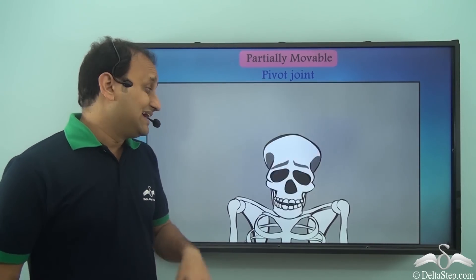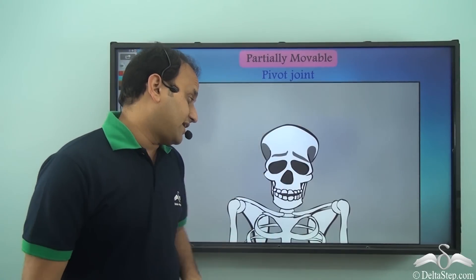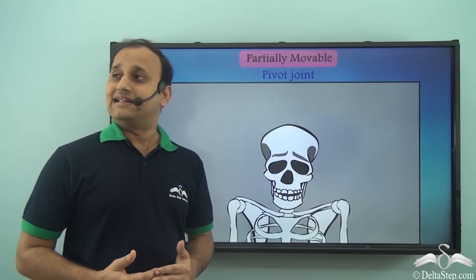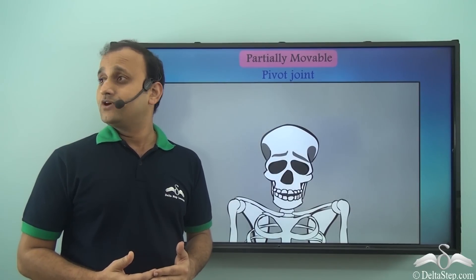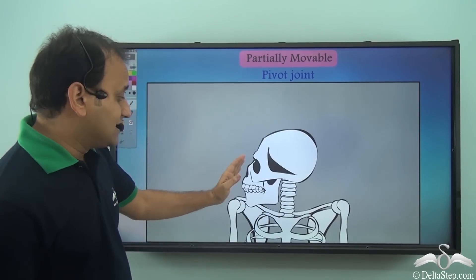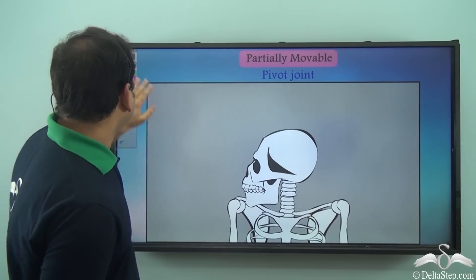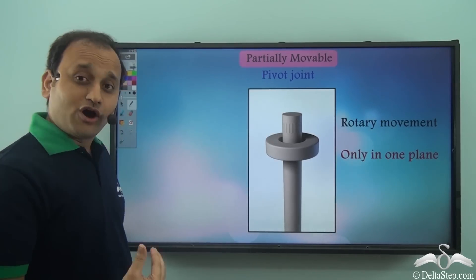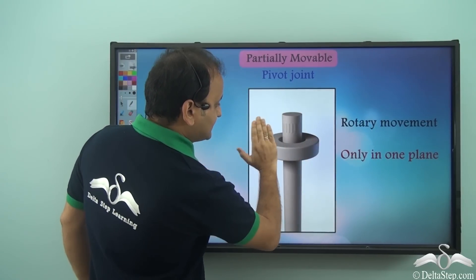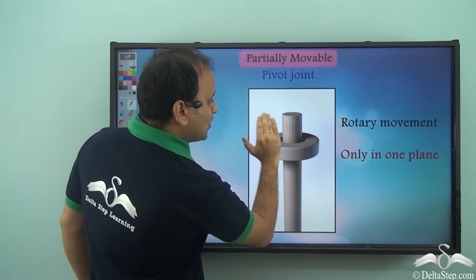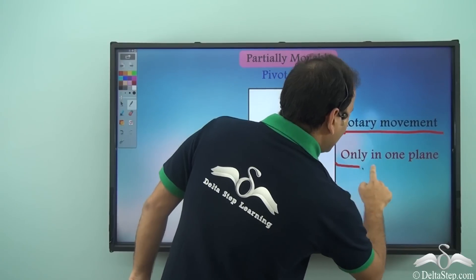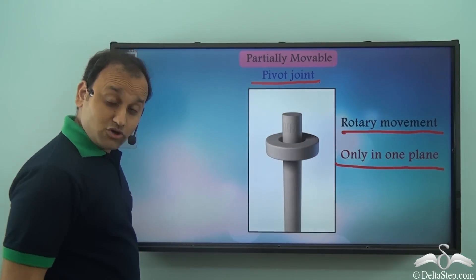In the case of partially movable joints, another example is our neck. As you rotate your neck, this is the maximum limit on this side and then this is the maximum limit on the other side — after that it gets locked. Such joints are called pivot joints. They are able to rotate but only on a fixed plane, rotating like this and only like this, with no other direction available. So pivot joints have a rotary movement in only one plane and they are also partially movable.